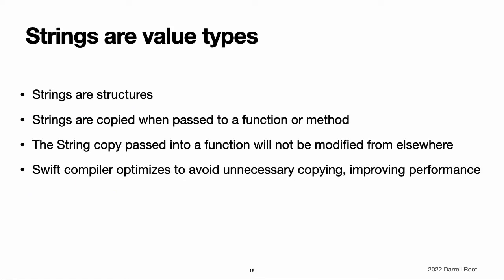Strings are value types. Swift's String is a value type. If you create a new string value, that string value is copied when it is passed to a function or method, or when it is assigned to a constant or a variable. In each case, a new copy of the existing string value is created, and the new copy is passed or assigned, not the original version. Value types are described in structures, and enumerations are value types.